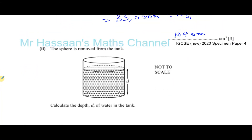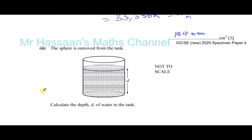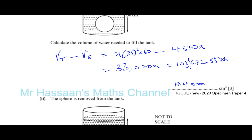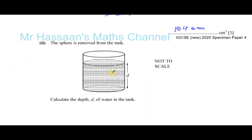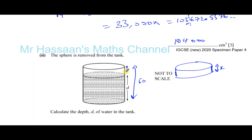Part b(ii): the sphere is removed from the tank. Calculate the depth of water remaining. The tank was completely filled with water, then the sphere was removed. The volume of water that dropped is equal to the volume of the sphere. Let x be the height that the water dropped. The total height of the cylinder was 60, so the final depth will be 60 minus x.